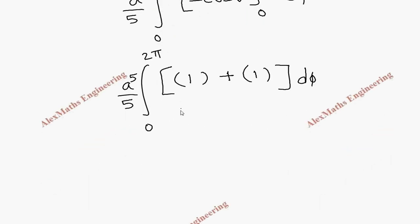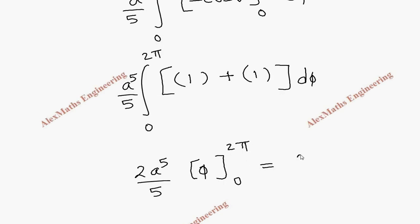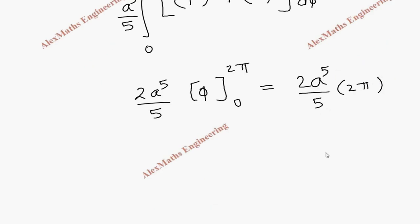So these two can be taken out, giving 2a⁵/5. The integration of dφ is φ, with limits from 0 to 2π. Substituting the upper limit gives 2a⁵/5 × 2π. So totally, the final answer is 4πa⁵/5.